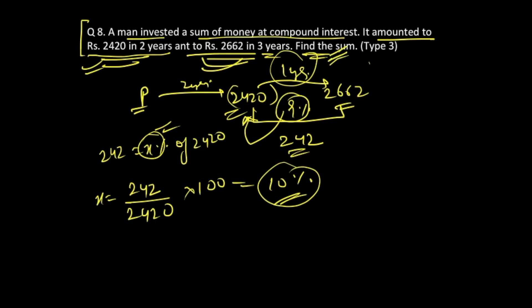But the question is asking find the sum. So basically the principal value is not known to us and that has to be found out. Right? You also know that this principal sum in two years with this rate of interest, now we know that 10 percent is the rate of interest, for two years became 2420. This is the process that we know.